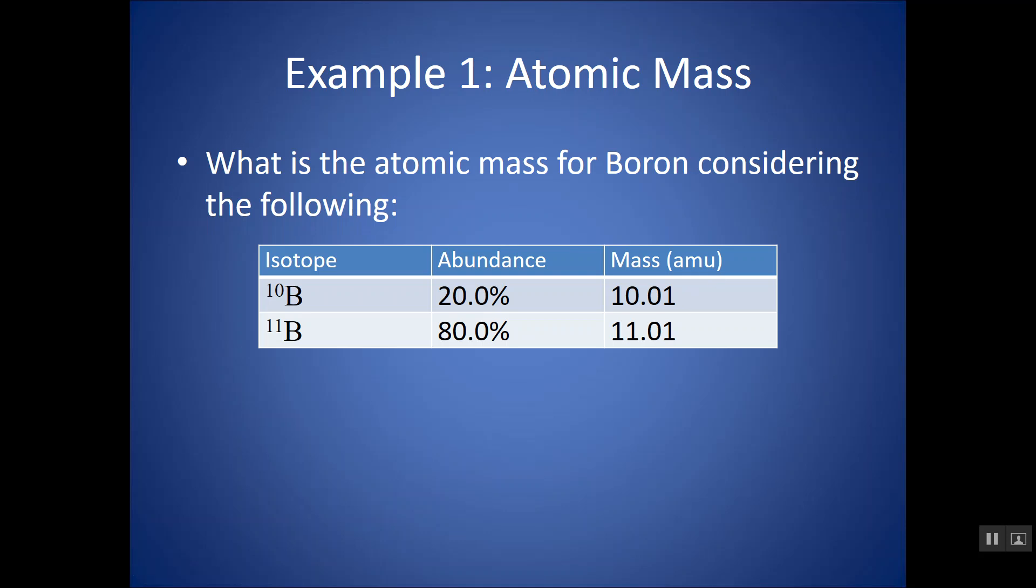And notice that this is mass in units of AMU. AMU, remember, stands for atomic mass unit. It's a very, very small unit. There's about 6.022 times 10 to the 23rd AMUs in 1 gram.